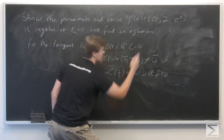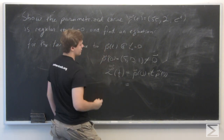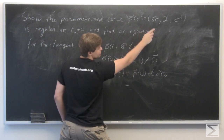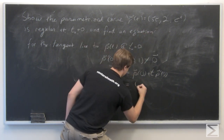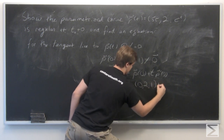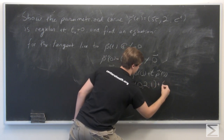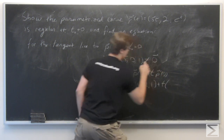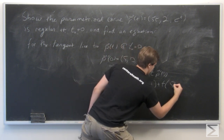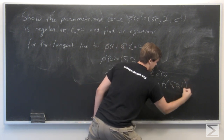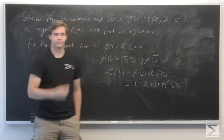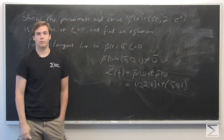We just plug and chug. P of 0 is going to be (0, 2, 1) plus t times — we already calculated — that's (5, 0, 1). And that's the equation of the line. And we're done.